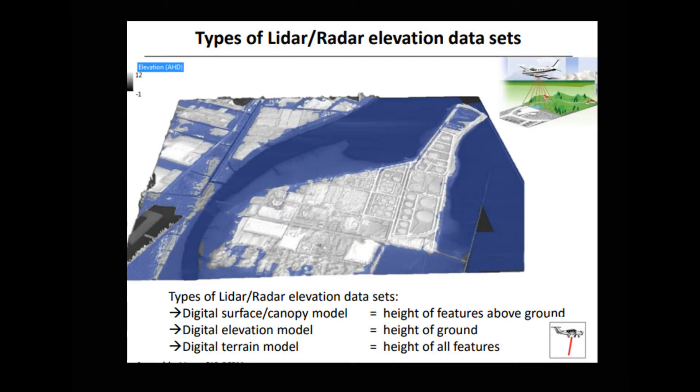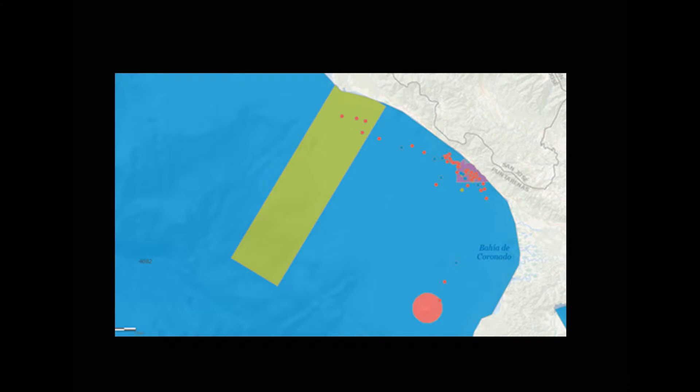These are the digital surface canopy model, which is the height of features above ground; the digital elevation model, which is the height of the ground; and the digital terrain model, which is the height of all features. People may also add their own observation of flooding via mobile. How to do this, there are multiple Esri MOOC courses which show you how to do this general thing. This is one of them, which is Wales, I believe in Cuba or South America somewhere.